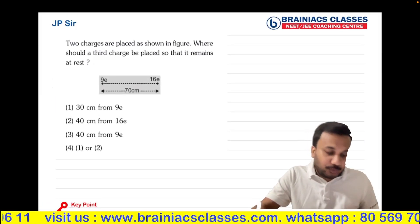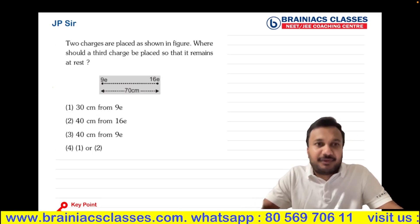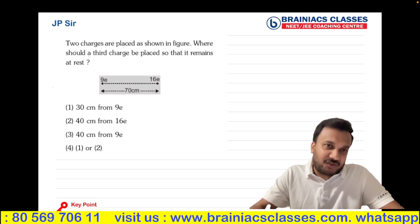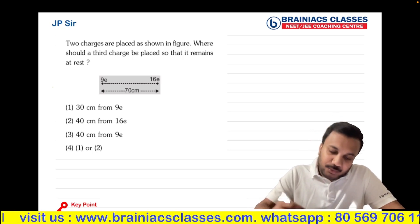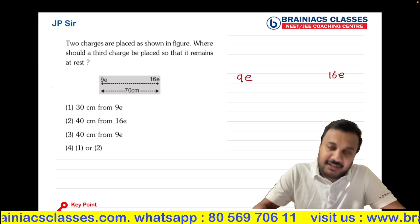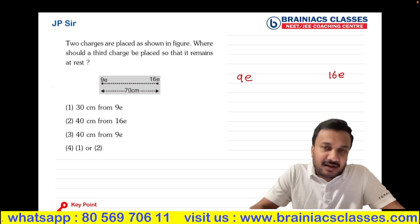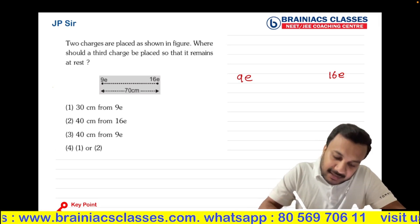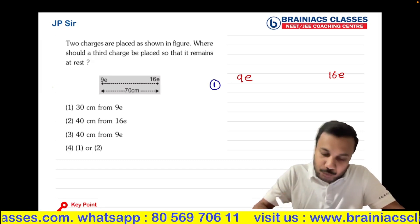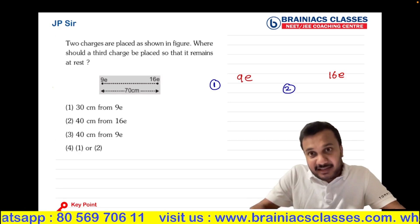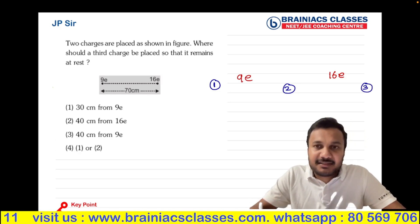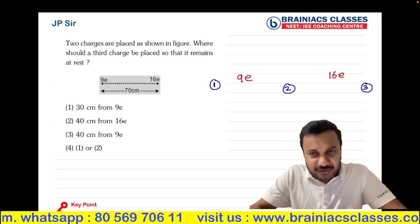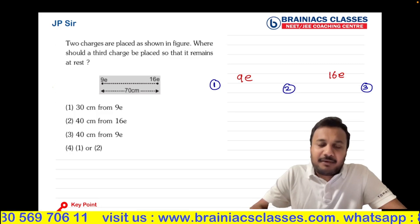Question number 2 in the daily capsule: two charges are placed as shown in the figure. Where should the 3rd charge be placed so that it remains at rest? We have charges 9E and 16E. The question does not mention the sign of the 3rd charge, so by default we assume it is a positive charge.